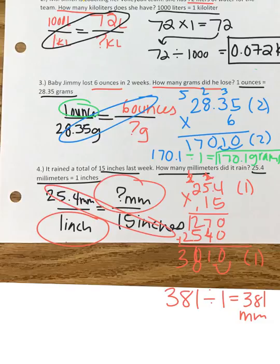Flip your paper over and try the next four on your own. Remember to set up your conversion first, then fill in what you know, and solve it like we've been solving proportions. Check the key online and check all of your work — they may be set up a little bit differently but you should get the exact same answers if you're solving correctly. Good luck!